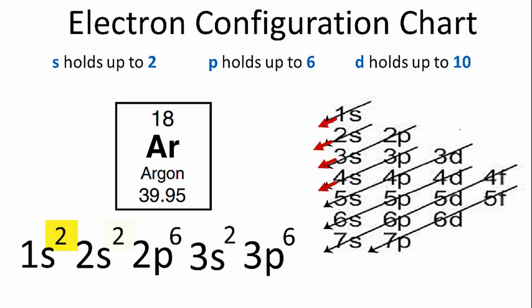That gives us 18, which is the number of electrons for the argon atom. This is Dr. B with the electron configuration for argon. Thanks for watchin'.